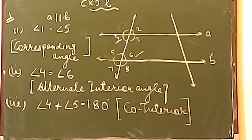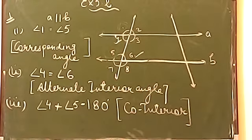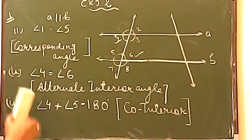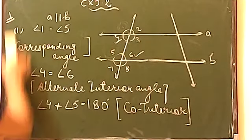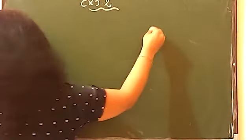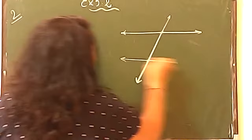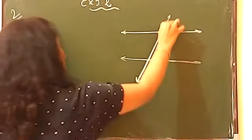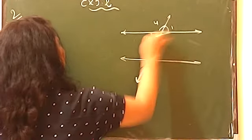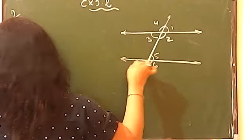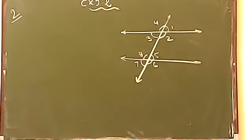Question number 2 is asking us to identify which pairs are corresponding, which pairs are alternate, which pairs are interior angles on the same side, and which pairs are vertically opposite angles. Let me tell you by using the figure. This figure is similar to the first one, but here we have only 1 transversal line, not 2. The angles are 5, 6, 7, and 8.